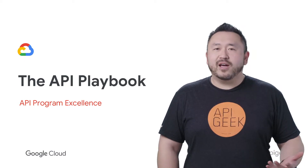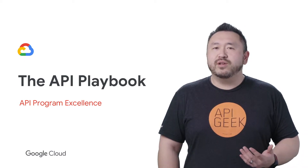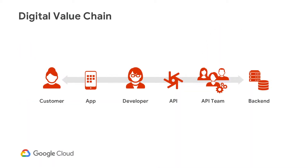The API Playbook is a living document that guides the overall direction of your API program. When we consider the digital value chain, every aspect is an integral part of the API Playbook. For example, how do you ensure your APIs are secure? What processes will you have in place to connect your back-end services to your applications? And how will you engage your community and customers to ensure your API program is successful? These questions and others all need to be answered.